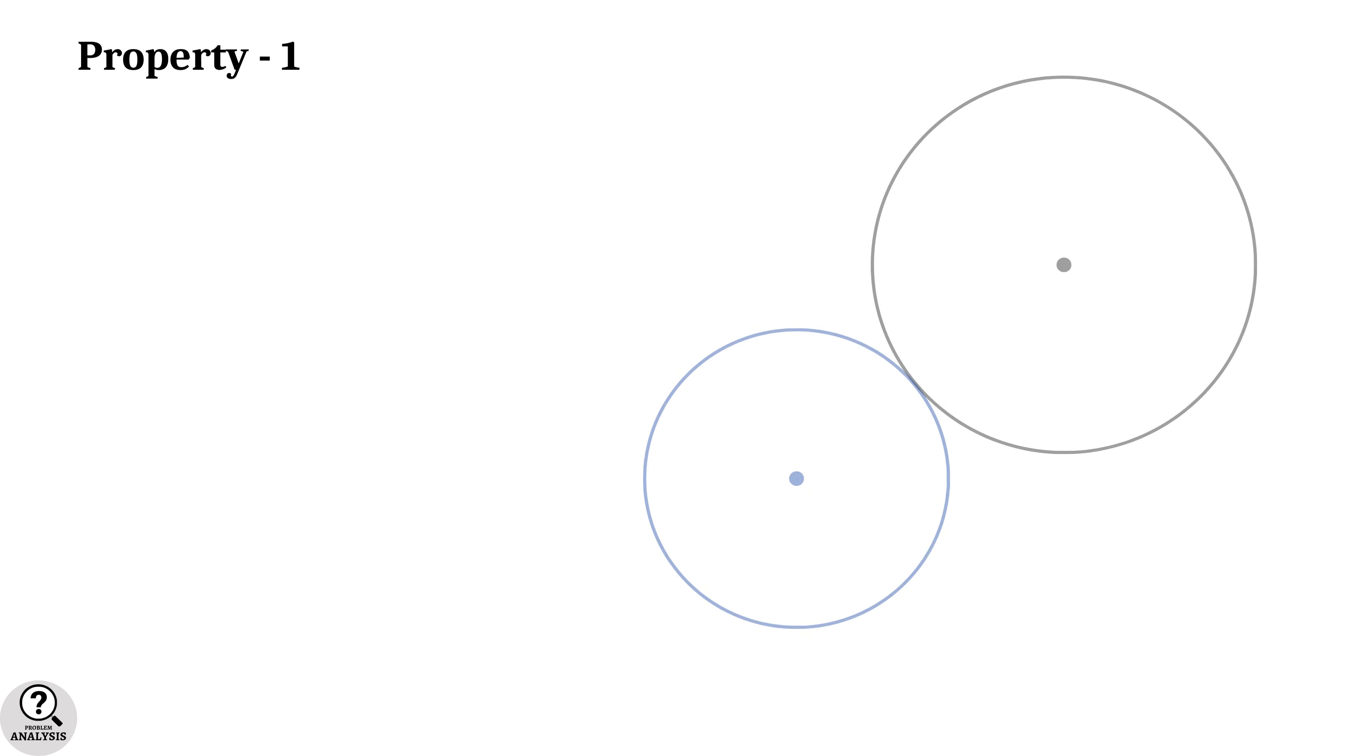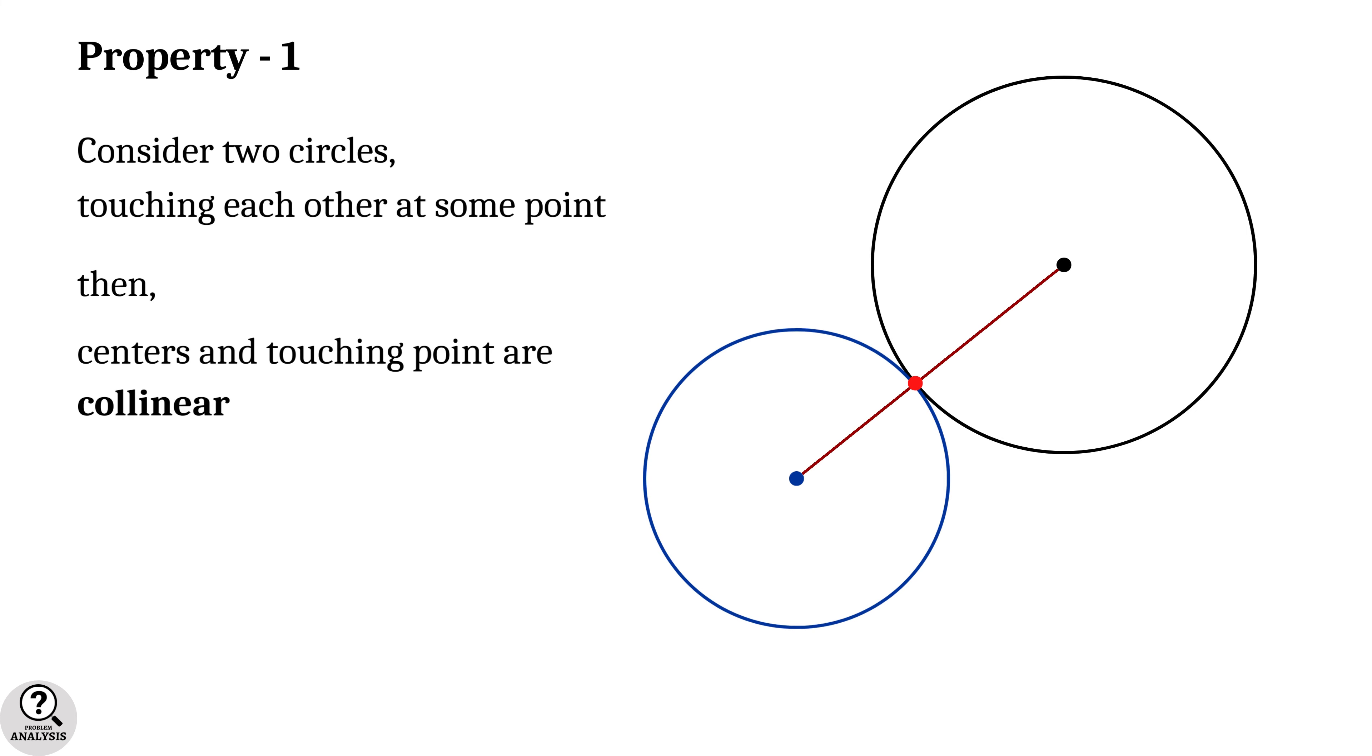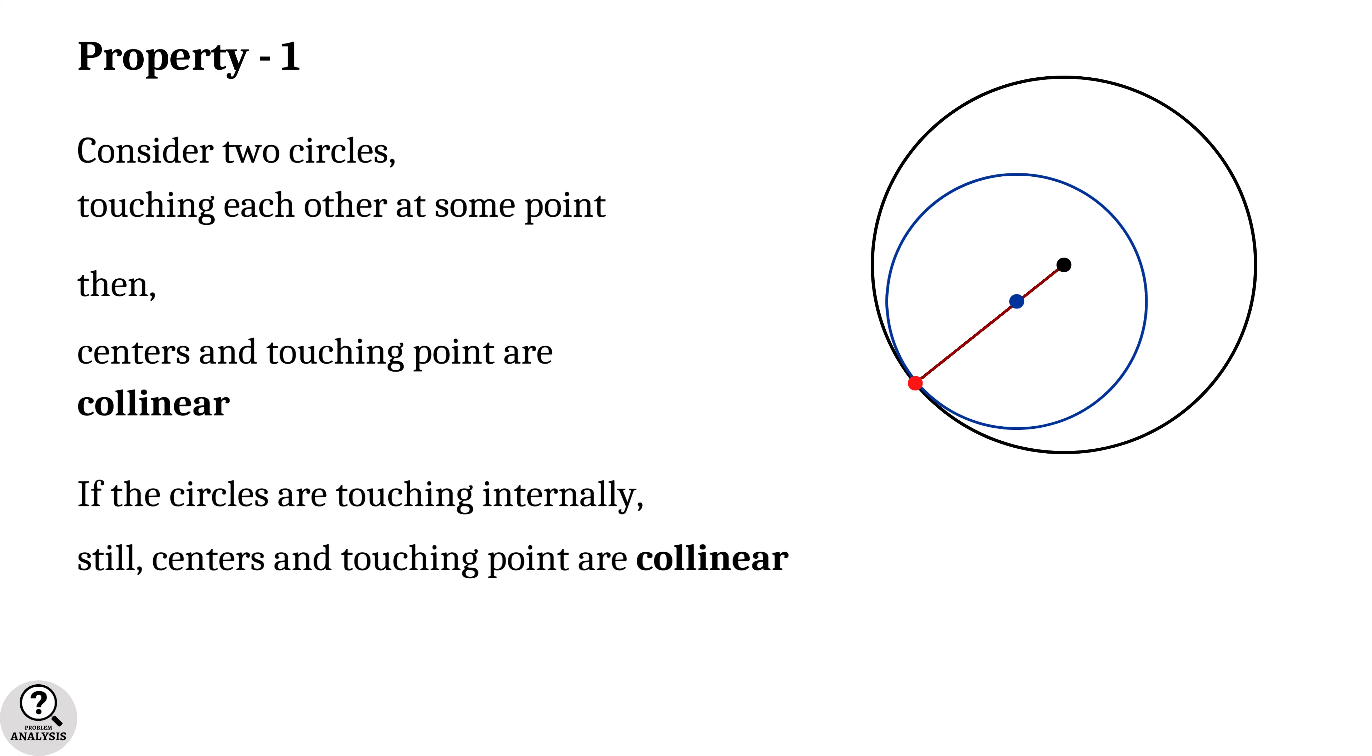Property 1. Consider two circles touching each other at some point externally. Then the fact is, the centers of them and their touching point are collinear. Similarly, if the circles are touching internally, still the result is true. That is, centers of the circles and their touching point are lying on the same line.